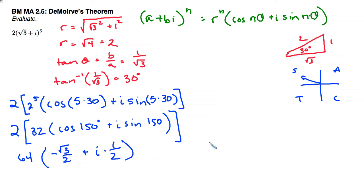Distribute in the 64, and I get my final answer of negative 32 square root of 3 plus 32i. And there is my expanded form. Much easier than having to multiply that square root of 3 plus i five times.